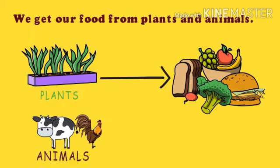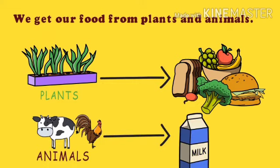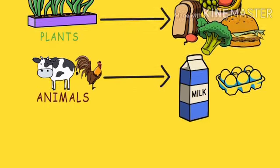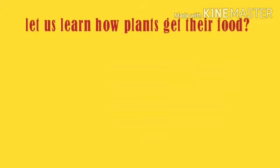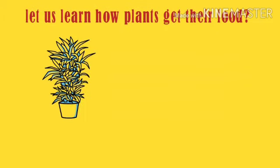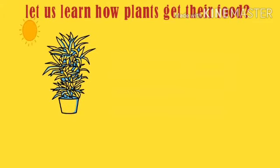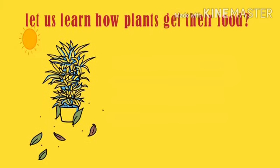These are milk, milk products, eggs, etc., as shown in the picture. So we are completely dependent on both plants and animals. In today's class we will find how plants get their food. Have a look at the picture.